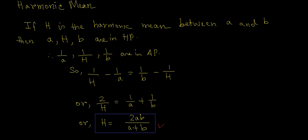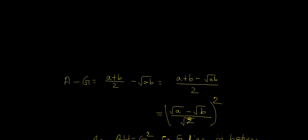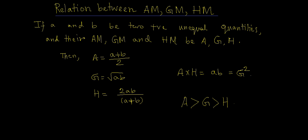Now let's see the relation between arithmetic mean, geometric mean and harmonic mean. If A and B be two positive and equal quantities and their arithmetic mean, geometric mean and harmonic mean be capital A, capital G and capital H,